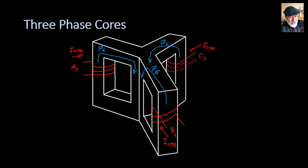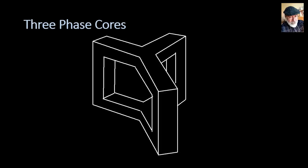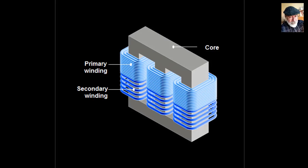We have no advantage yet — but here's the key question: in a three-phase system, the fluxes of phases A, B, and C are out of phase by 120 degrees. So the sum of the three fluxes in the center column is zero. That means we can remove it entirely — saving a lot of iron, weight, and money. The remaining shape is a bit awkward, so we push the far column into the center position and align them, which is easier to manufacture. This works fine as long as the currents are balanced.